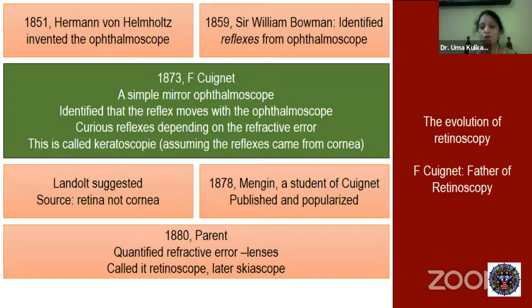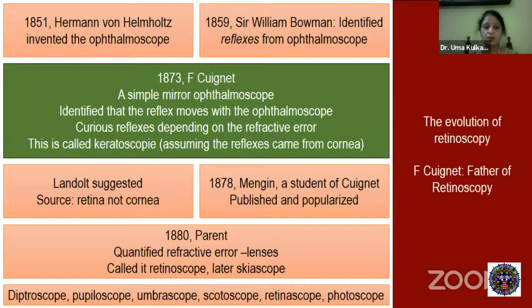Parent also called it a skyoscope because he was testing a shadow. Later, many other names came up — dioptroscope, pupiloscope, ambrascope, scotoscope, retinoscope, and photoscope. There was clearly a lot of confusion about the mechanism, which is why so many names arose.